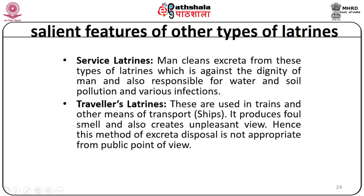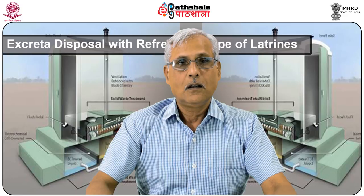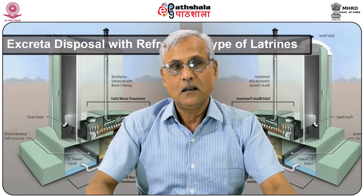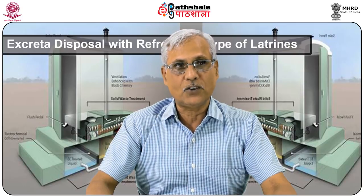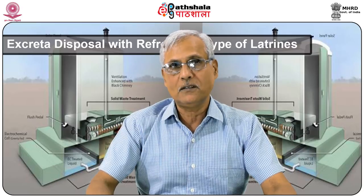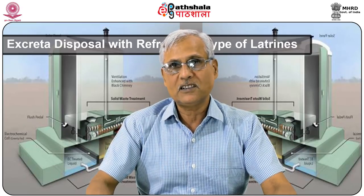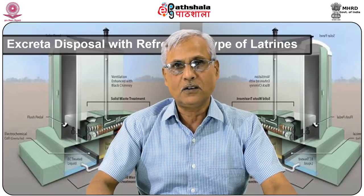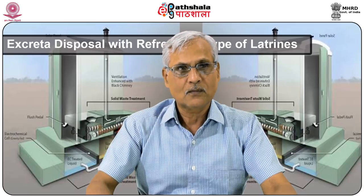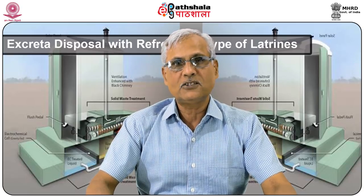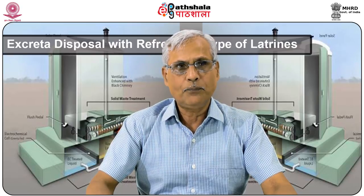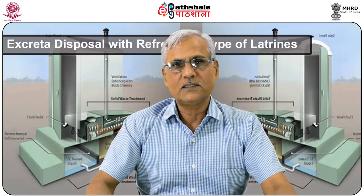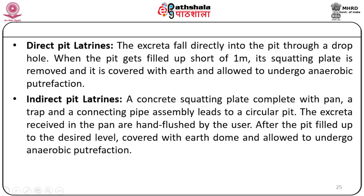In aeroplanes, chemical closets are used. In direct pit latrines, the excreta falls directly into the pit through a drop hole. When the pit gets filled up to one meter below the squatting plate, the plate is removed, covered with earth, and allowed to undergo anaerobic putrefaction. In indirect pit latrines, a concrete squatting plate complete with pan, trap, and connecting pipe assembly leads to a circular pit. The excreta receives the pan or is hand-flushed by the user. After the pit is filled up to the desired level — one meter below — it is covered with an earth dome and allowed to undergo anaerobic putrefaction.